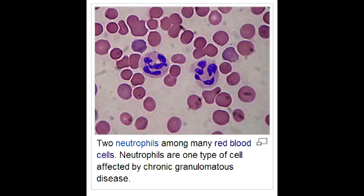What are the two diagnostic tests for chronic granulomatous disease? The two tests used to diagnose chronic granulomatous disease include the dihydrorhodamine (DHR) flow cytometry test, along with the nitro blue tetrazoleum test.